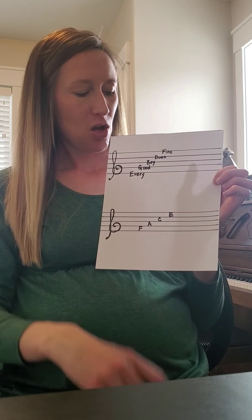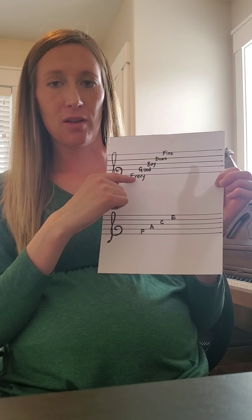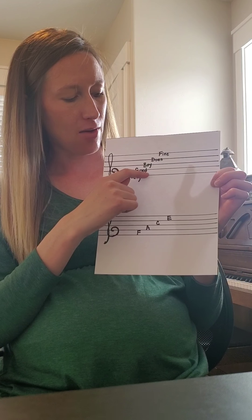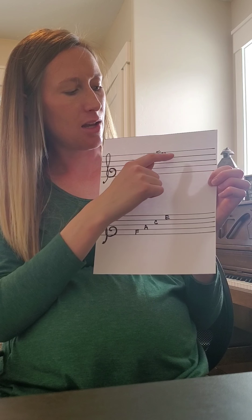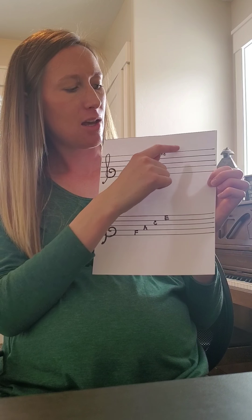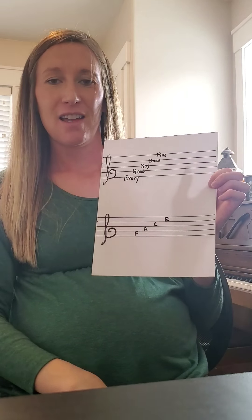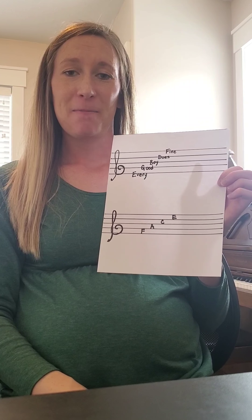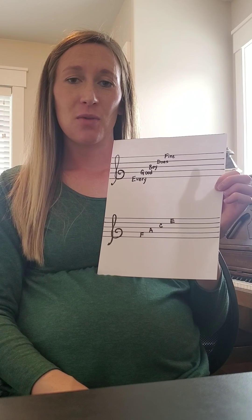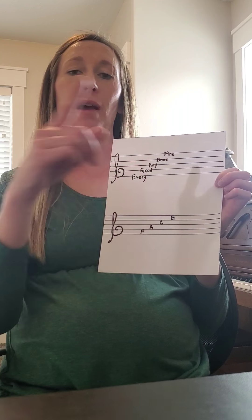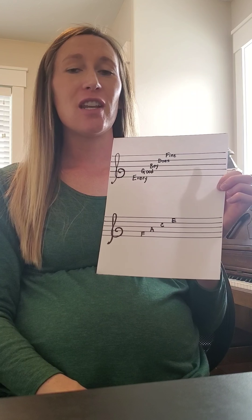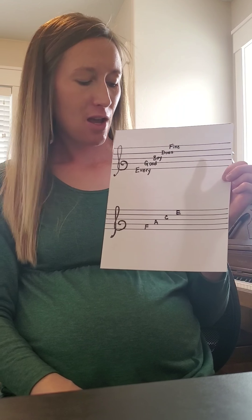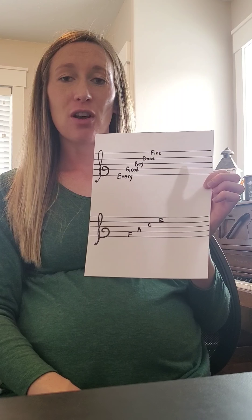So if we did it all together, we'd go from the bottom: E, F, G, A, B, C, D, E, F. It's like the alphabet — we don't have any H's or I's. Once we get to G, we start back over on A. G is the highest we go. So those are the names of the notes on treble clef.